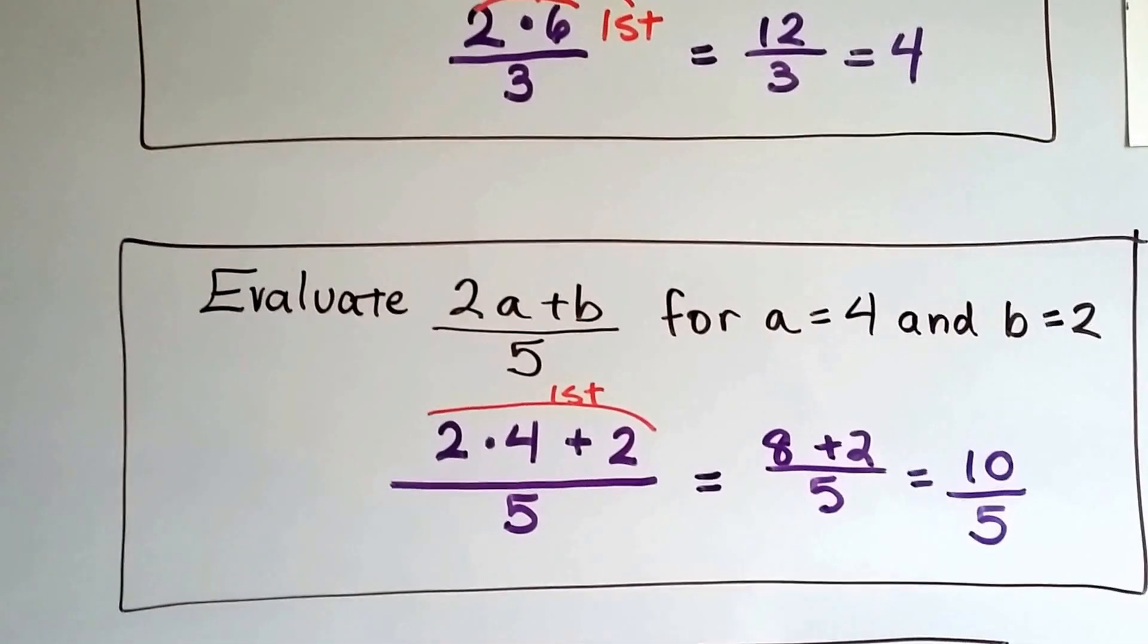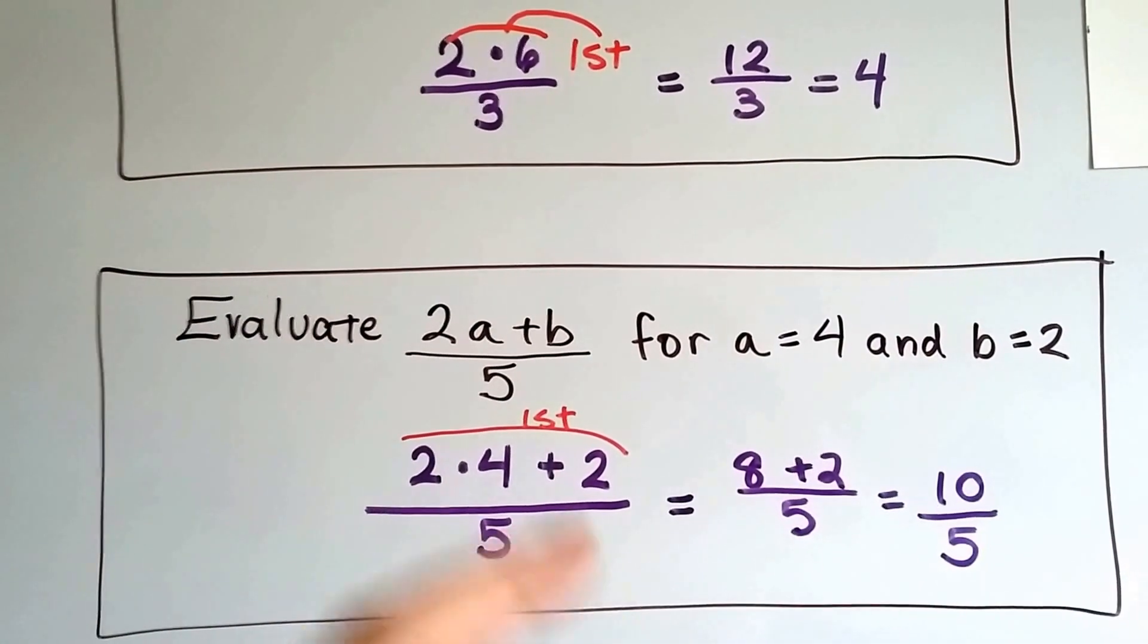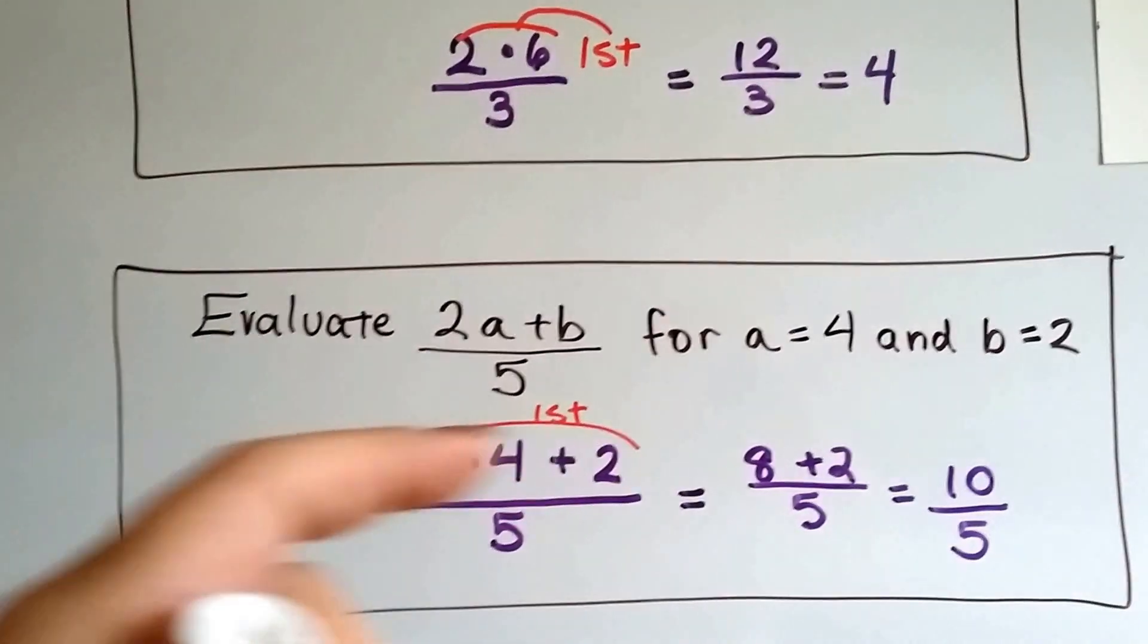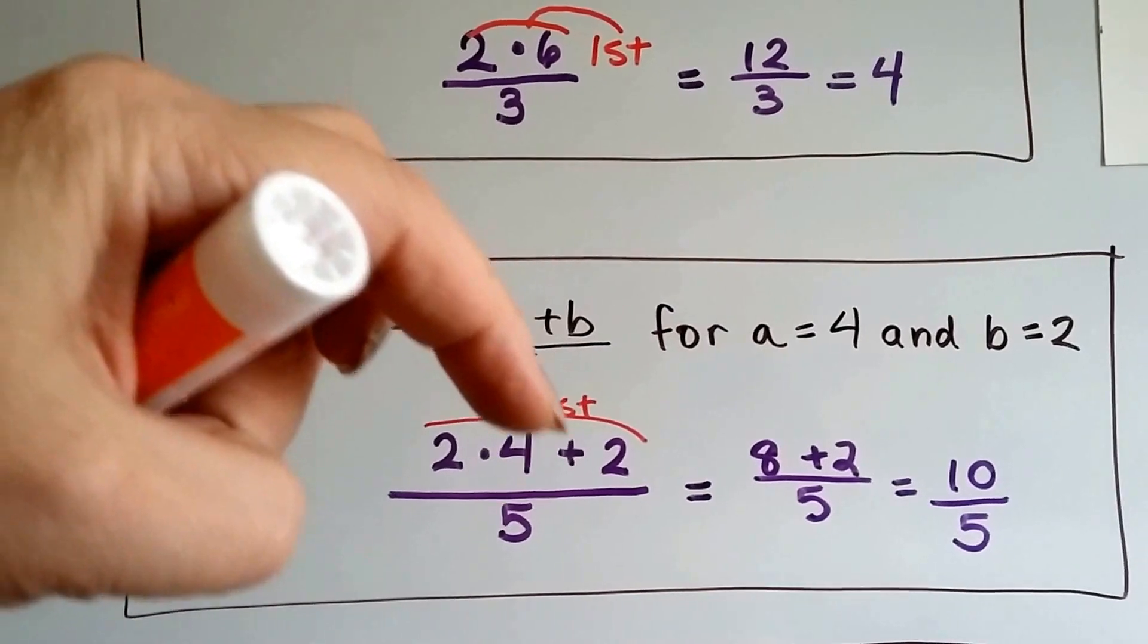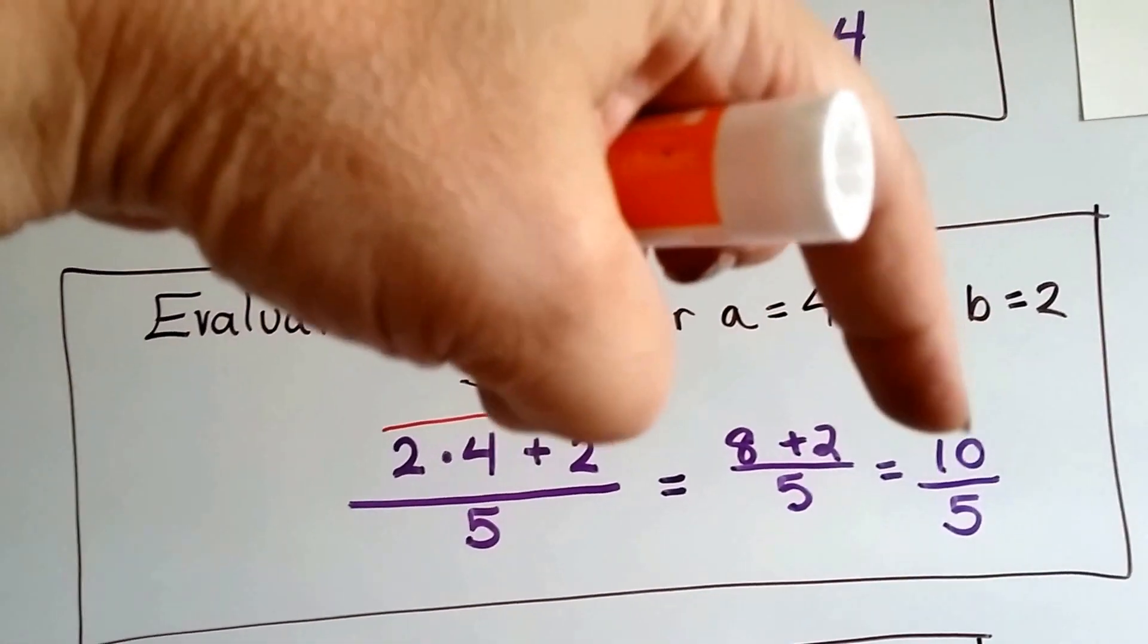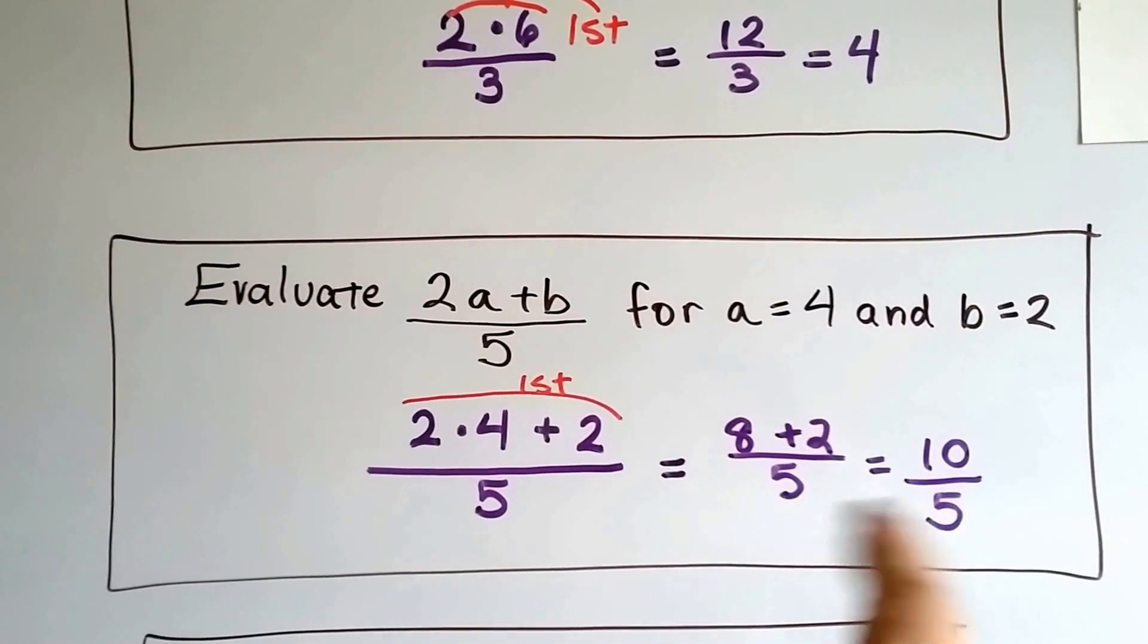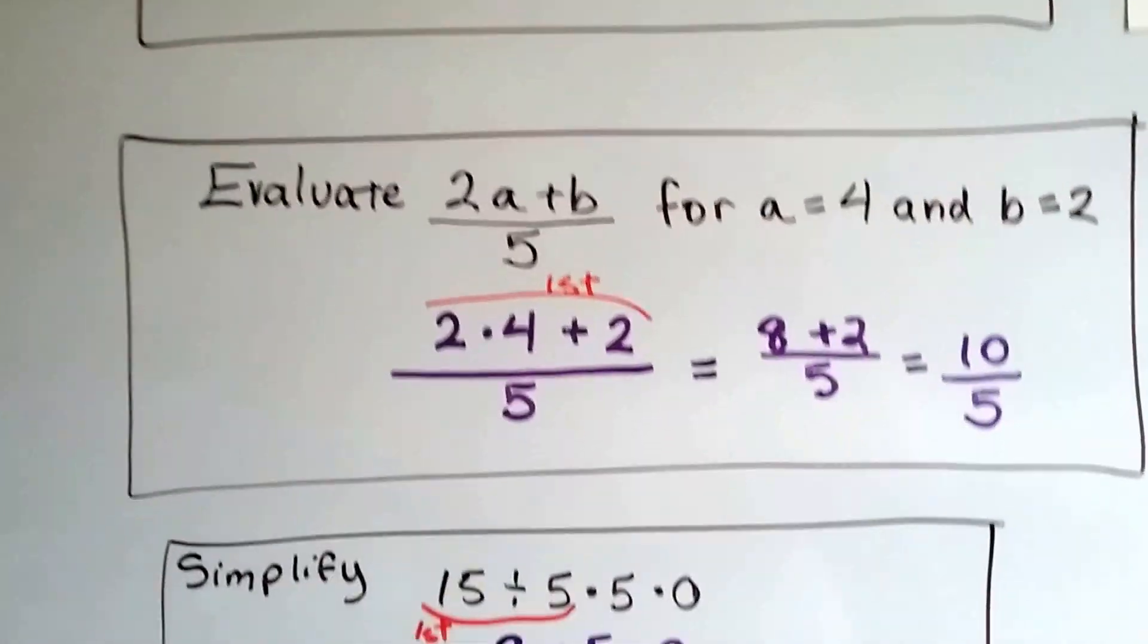If it says evaluate 2a plus b over 5, and a is 4 and b is 2, we plug those in and get 2 times 4 plus 2 over 5. We do the numerator part first. 2 times 4 is 8, and we add the 2. There's the 2 we're adding. The 8 plus 2 is 10. We slide this all over underneath so that the 5 is underneath. We have 10 divided by 5, and that equals 2.